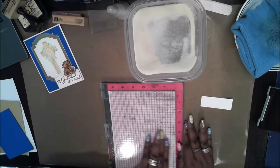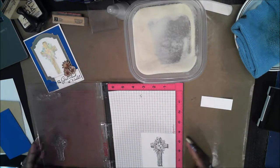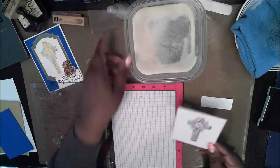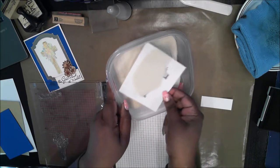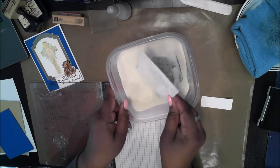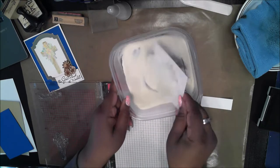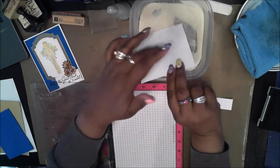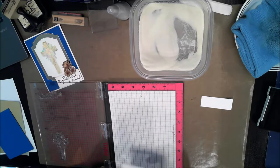Now while it's still wet just drop it into the embossing powder a couple of times. Knock off the extra. That looks good.